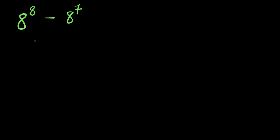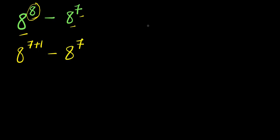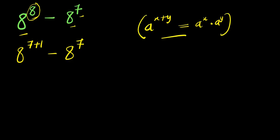How to evaluate without a calculator: 8 to the power of 8 minus 8 to the power of 7. We express 8 here as the sum of 7 and 1, so we have 8 to the power of 7 plus 1, minus 8 to the power of 7. Now using the rule: a to the power of x plus y equals a to the power of x times a to the power of y. Applying this, we have 8 to the power of 7 times 8 to the power of 1, minus 8 to the power of 7.